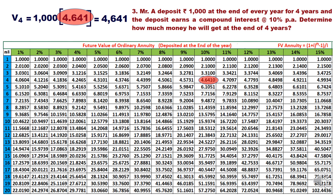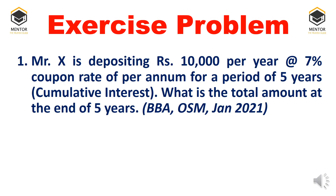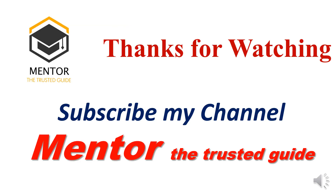Here is an exercise problem from Osmania University: X deposits 1000 per year at a coupon rate of 7% per annum for five years with cumulative interest. What is the total amount at the end of the fifth year? We have not been told whether it is deposited at the beginning or end, so presume it is at the end and try to solve it. I will provide the answer in video number three, where I explain series of payments deposited at the beginning of the year. Thank you for watching — please subscribe to my channel, Mentor the Trusted Guide.